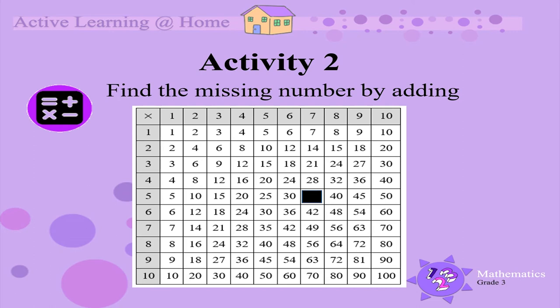Activity 2. Now let's find the missing number in a different way. Let's find the missing number by adding. Look carefully at your multiplication table. What number would you add to 30 to find the missing number?